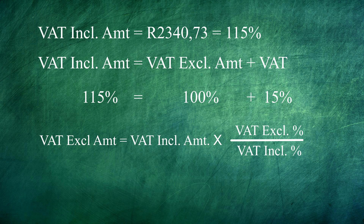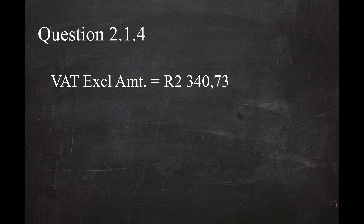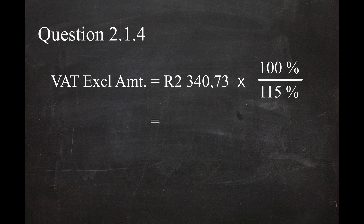You can use this formula for calculating the VAT exclusive amount if you are given the VAT inclusive amount and the VAT percentage: the VAT exclusive amount equals the VAT inclusive amount multiplied by 100% divided by 115%. So the VAT exclusive amount equals R2340.73 multiplied by 100 over 115, which gives you a VAT exclusive amount of R2035.42.